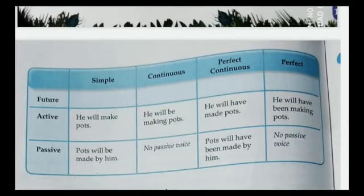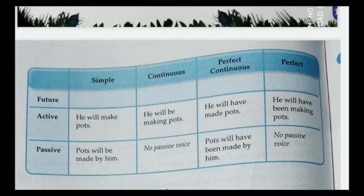For future tenses, only two forms change — the others do not. Simple future: 'He will make pots' becomes 'Pots will be made by him.' Future continuous has no passive change. Future perfect: 'He will have made pots' becomes 'The pots will have been made by him.' Note: there is a printing error in the table — one heading says 'present continuous' but should say 'perfect.'